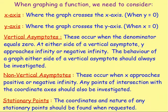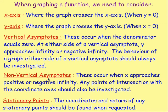A very quick recap: what we were doing in the last lesson was sketching rational functions. The steps we learned, we just follow here — it's the exact same thing. We still need to find where the graph crosses the X-axis (when Y equals zero), and where it crosses the Y-axis (when X is zero). We look at the vertical asymptotes — they occur when the denominator equals zero. We need to investigate what happens either side of the vertical asymptote, and we look at the non-vertical asymptotes, where X approaches positive or negative infinity. We may also need to look for stationary points.